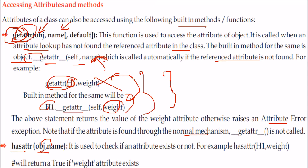Next is `hasattr(obj, name)`. This checks whether a given attribute exists in the object. For example, `hasattr(h1, 'weight')` will return True because the weight attribute exists in our h1 object.